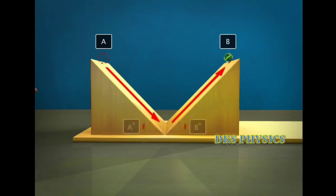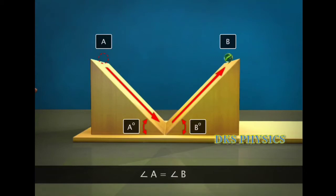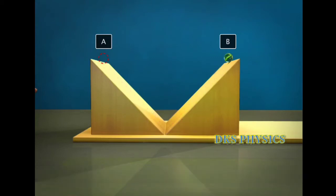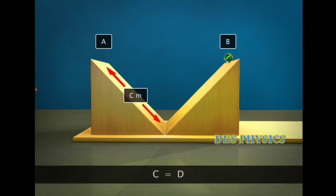In this case, the inclinations of the planes on both sides were equal. Therefore, the distance covered by the marble rolling down was the same as the distance it climbed up on the other plane.